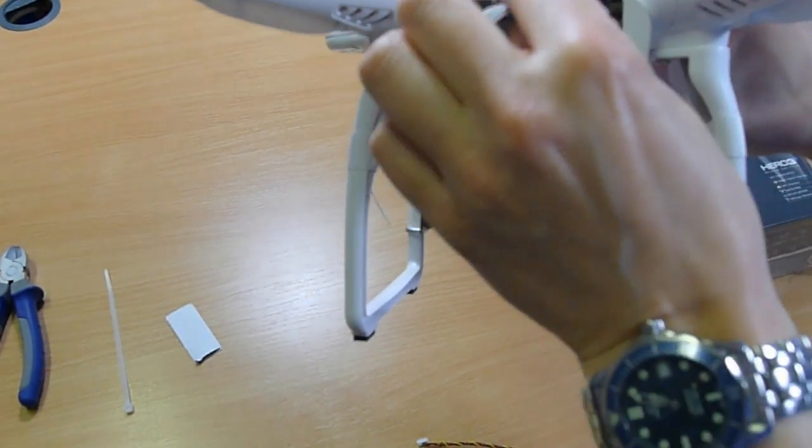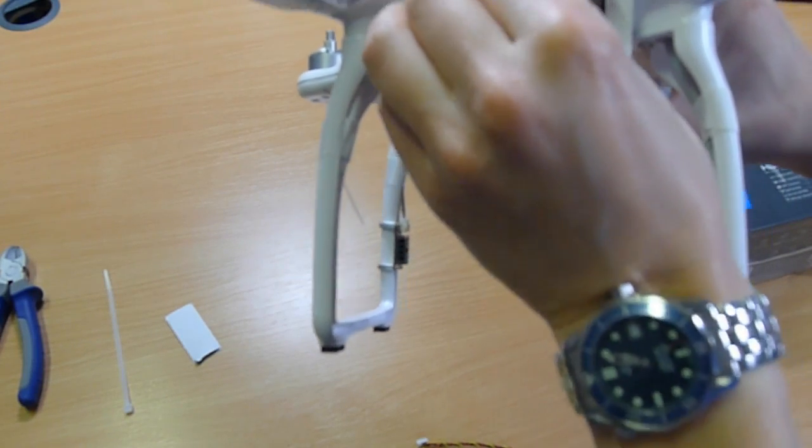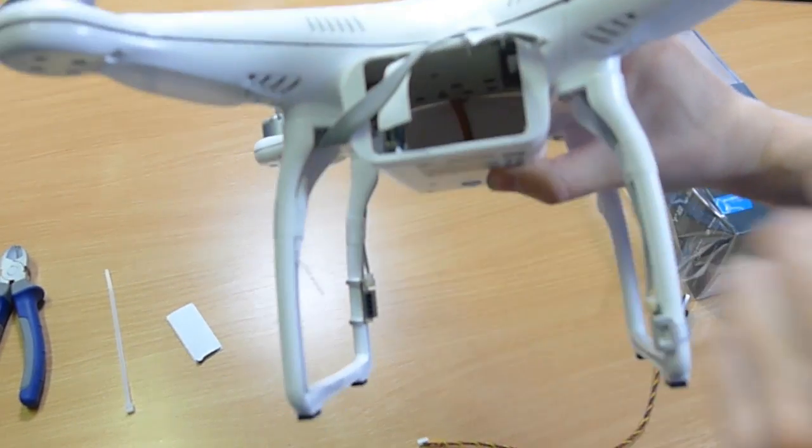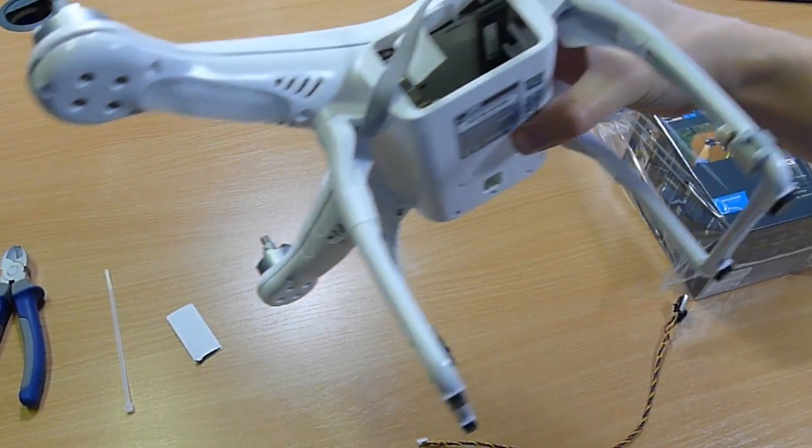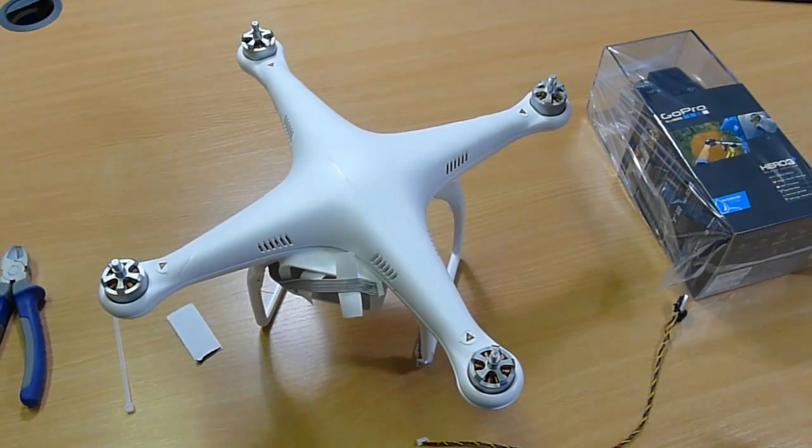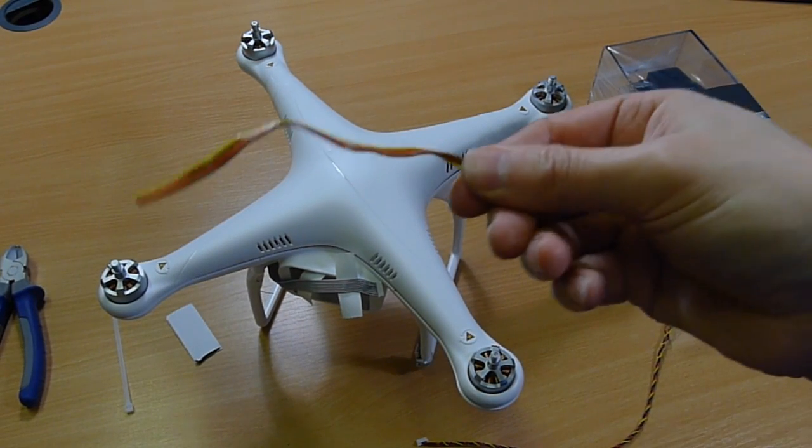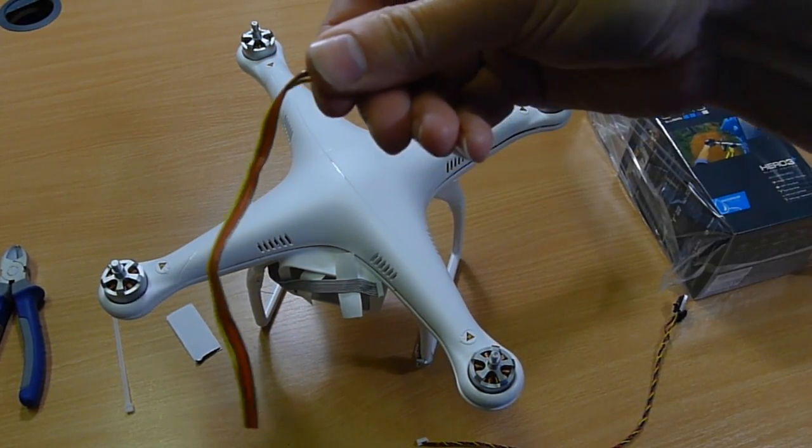When you receive yours you'll see it's got the Zenmuse cable taped to the bottom and also there's a little 3-inch pigtail for the video output. It looks like that and it's just poking out the bottom.